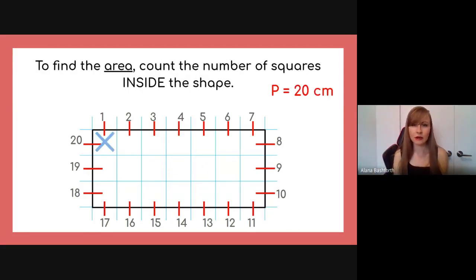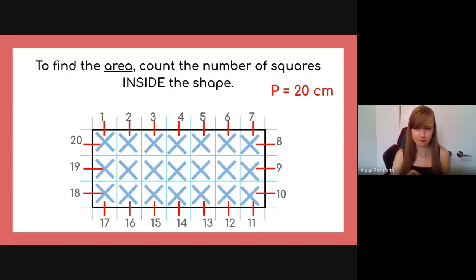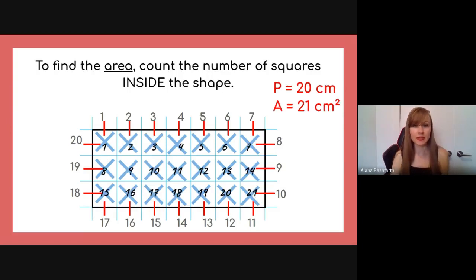And then so how do we find area then? You count up the number of squares inside the rectangle. And so we have an X on the first one. We can put an X inside of each one of the squares, and then we can count them up and we'll end up with 21. We don't have to put an X. We can just point and count. But this is how I'm showing you visually.